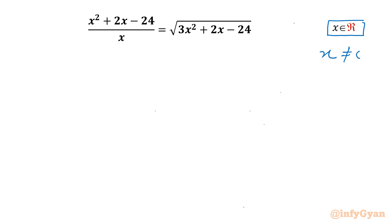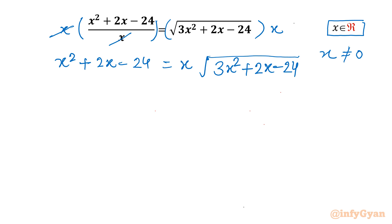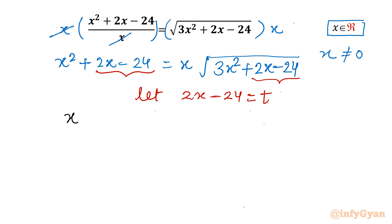So I will write x cannot be 0. Now I can multiply both sides with x. So this x will cancel. What is left is x² + 2x - 24 = x · √(3x² + 2x - 24). Now clearly a substitution is visible. It is 2x - 24. I will consider this as t. So let me write 2x - 24 = t. Now our equation will convert into x and t variables: x² + t = x · √(3x² + t).